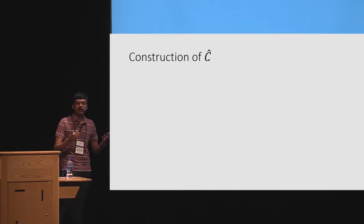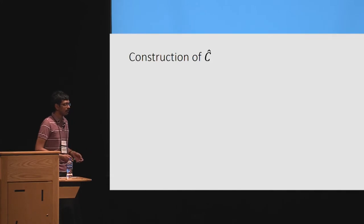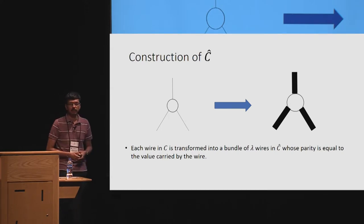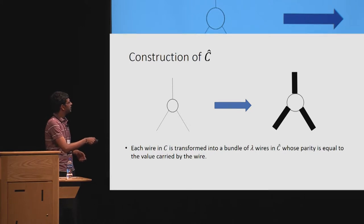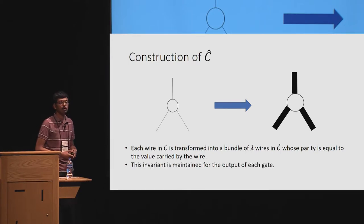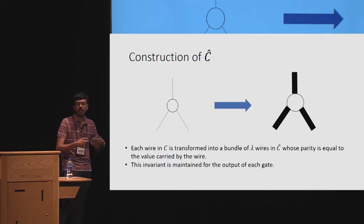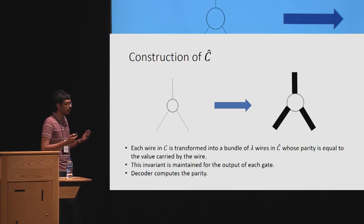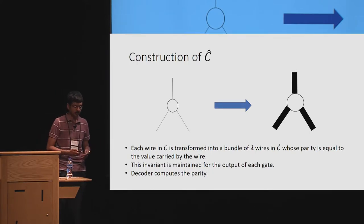Let's see how the randomized circuit C-hat is constructed. At a high level, every wire of the original circuit is transformed into a bundle of lambda wires in C-hat, such that the parity of this bundle equals the value carried by that wire. For example, if the value carried by a wire is 0, then in C-hat the parity of the corresponding bundle of wires will be 0. This invariant is maintained for the output of each gate: given two bundles whose parity is A and B, the output bundle has parity G(A, B). Given this, the decoder is simple — it just computes the parity and outputs it.